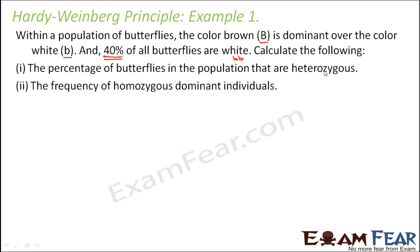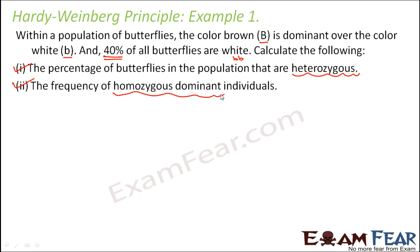Calculate the following: the percentage of butterflies in the population that are heterozygous, and the frequency of the homozygous dominant individuals. As mentioned, if you know the homozygous recessive value, you can calculate both heterozygous as well as homozygous dominant.